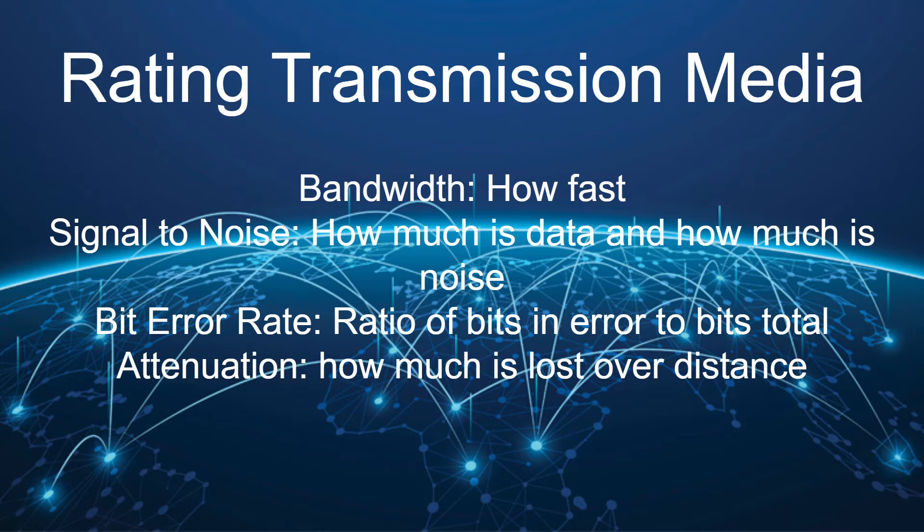Another way of rating transmission media is signal-to-noise ratio. Any time you're broadcasting over a medium — whether electrical wires or phone lines — those wires pick up extra noise. Signal-to-noise ratio is how much stuff the wire or wave is picking up that has nothing to do with the actual data being sent. We use the signal-to-noise ratio to judge transmission media by a bit error rate, which is how many bits are in error out of the total bits coming across. Electrons can escape as they travel, and sound waves degrade, which is part of what's called attenuation.